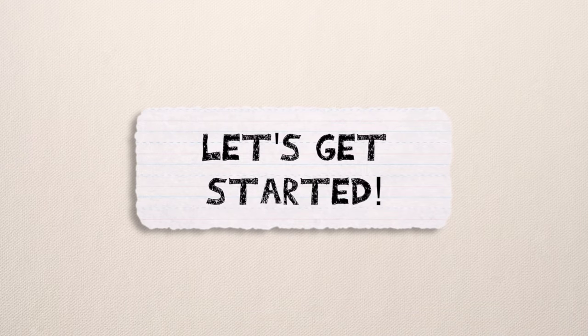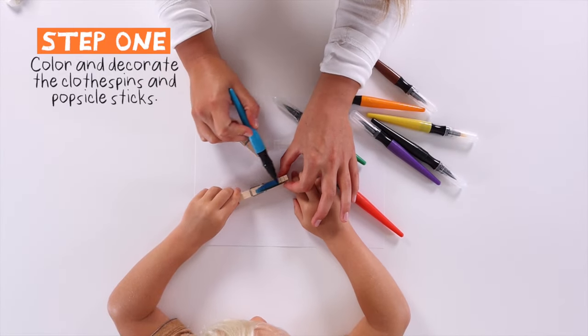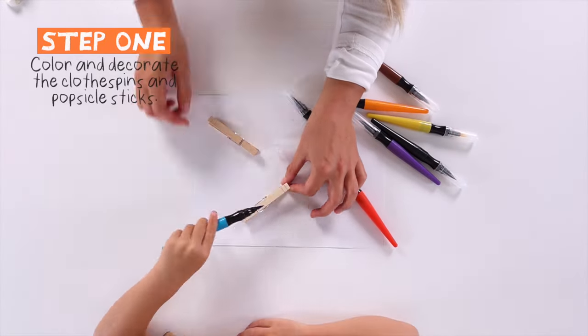And let's get started. First paint the clothespins, then paint the popsicle sticks. I use these paint markers.